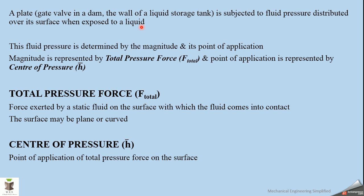This fluid pressure is determined by its magnitude and its point of application. The magnitude is represented by the total pressure force — pressure multiplied by area. The point of application is represented by the center of pressure, denoted by h̄. The total pressure force is denoted by F_total, and the center of pressure is the point at which the entire pressure force acts on the body.